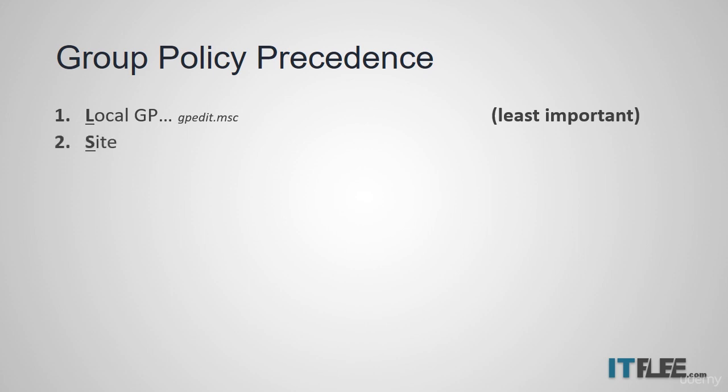Next, any group policy objects that are assigned to your site are then applied, and this means that it overwrites any conflicts it may find between the local and the site group policy. So if you configure a desktop wallpaper in the local group policy and you configure it in the site policy, the site policy will take precedence over the local group policy because it was applied after the local group policy.